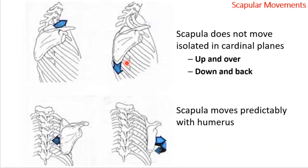When we look at elevation and depression of the scapula, retraction and protraction — this is review from earlier in the semester — the scapula does not really move in isolation. You might isolate it in certain exercises like a shrug, but in reality, all the scapula is trying to do is maintain a solid connection to the thorax and stabilize, maximizing the contact surface between the head of the humerus and the glenoid fossa.